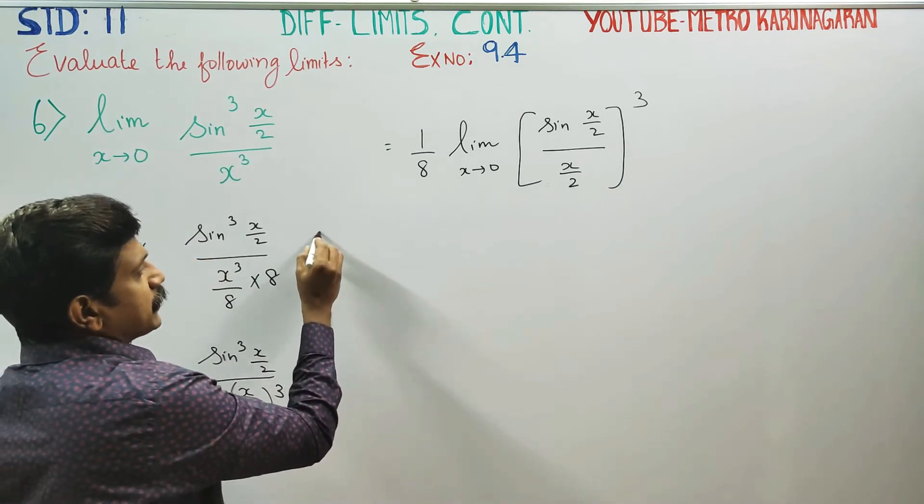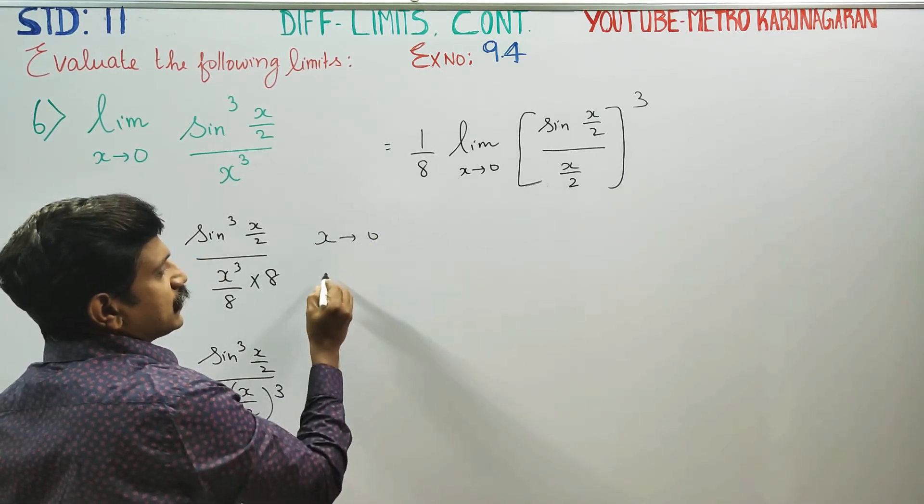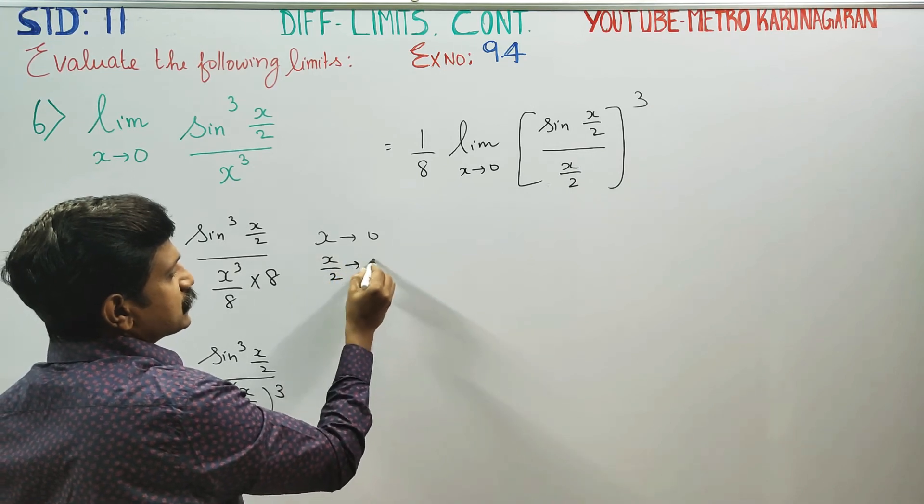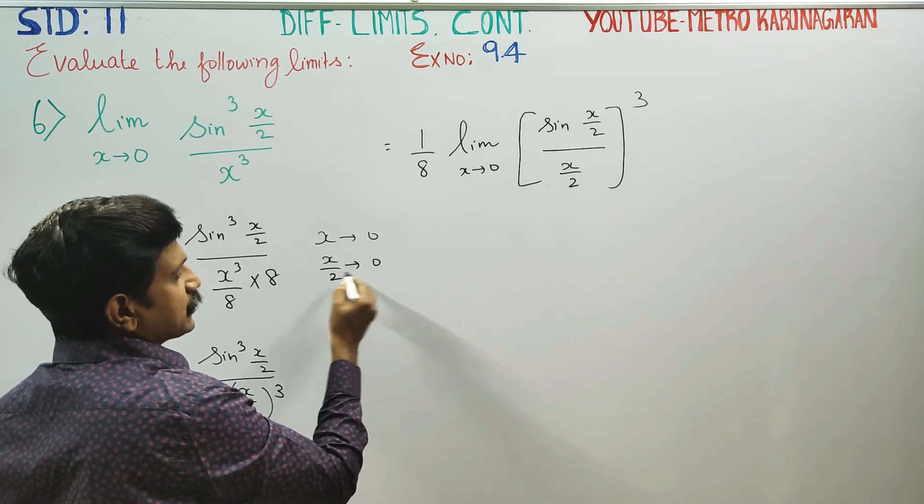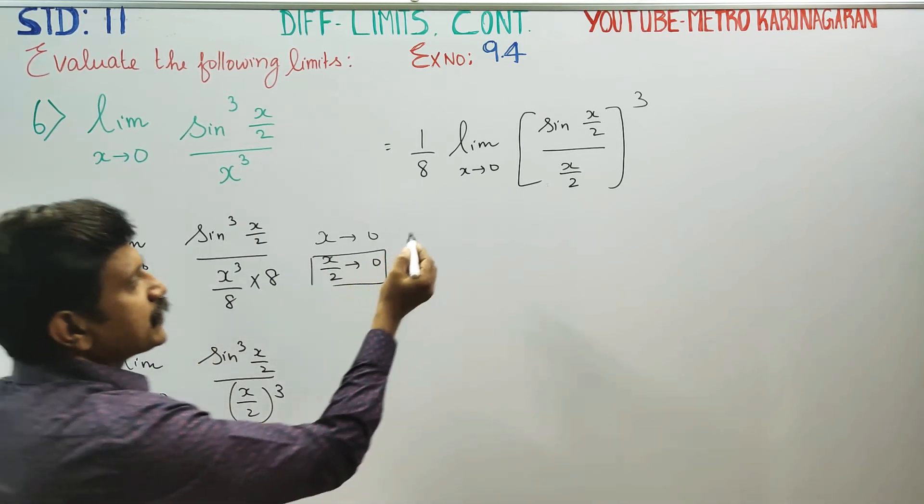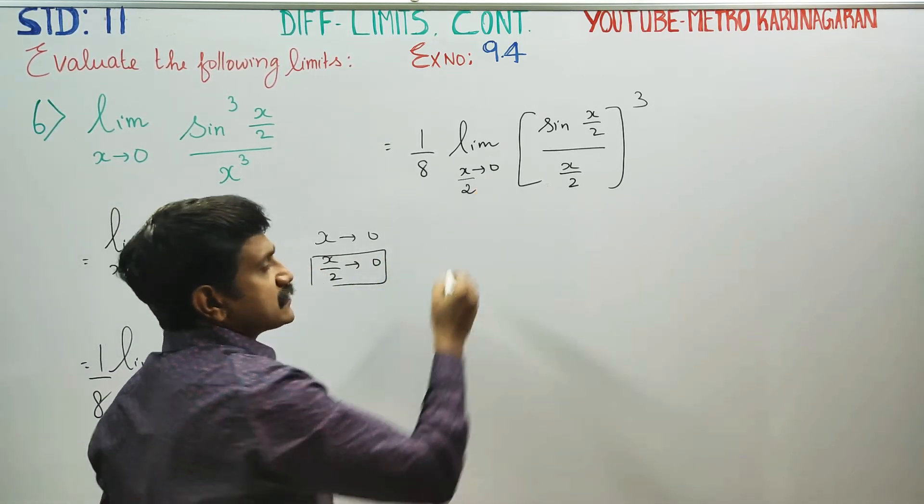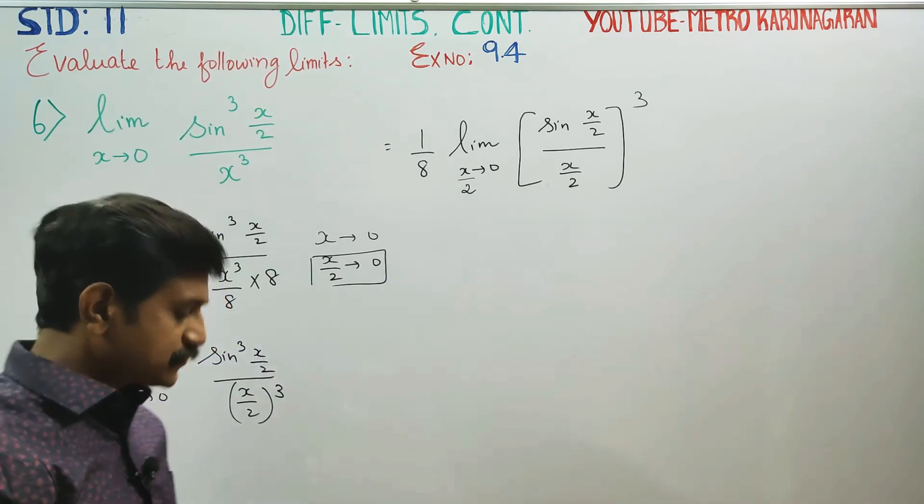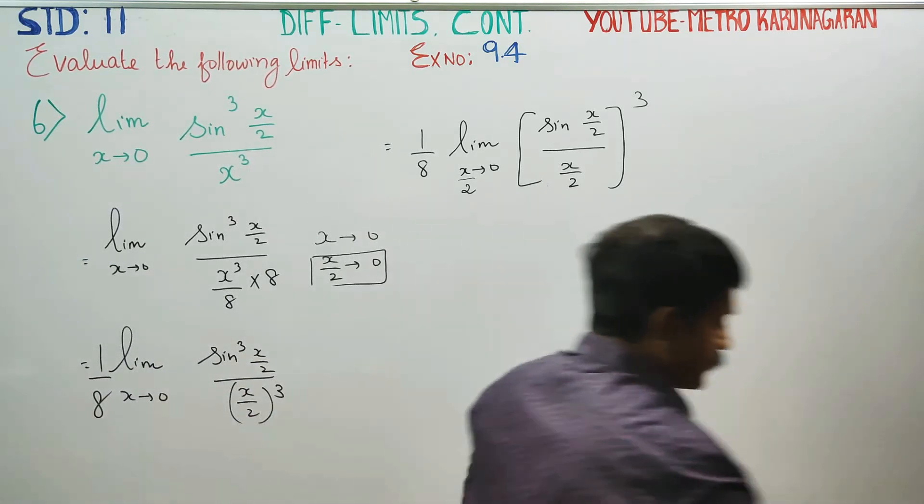This is why: x turns to 0. Divide by 2 on both sides, x/2 also turns to 0. Then when x turns to 0 can also be written as x/2 turns to 0, x/2 approaches 0. There is a very famous result.